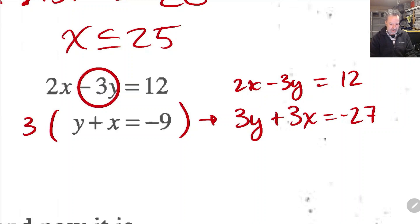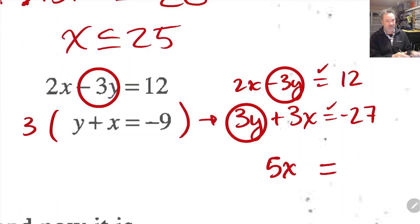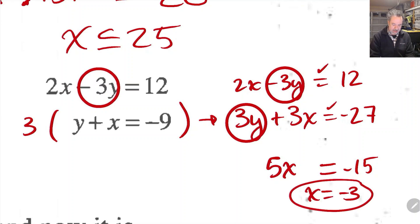These are on the same side of the equation, and I've got a positive 3y and a negative 3y. When I add these equal things to these equal things, I get equal things. I'm left with 5x equals negative 27 plus 12, which is negative 15. That means x equals negative 3.